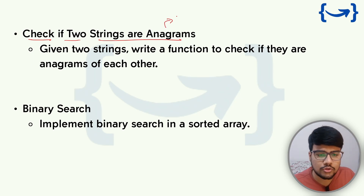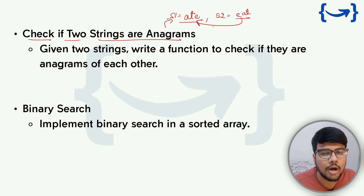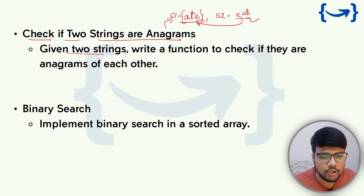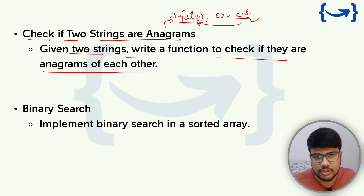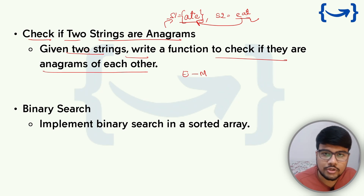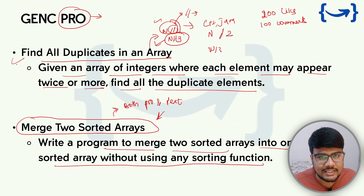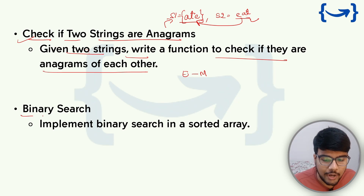Check if two strings are anagrams of each other — a fairly easy question. For example, 'ate' and 'eat' are anagrams because rearranging the letters of one forms the other. Write a function to check if two strings are anagrams of each other. The difficulty is easy to medium. For binary search, which is typically asked in any service-based company regardless of package, you need to know the algorithm thoroughly and also understand sorting algorithms and their underlying principles.